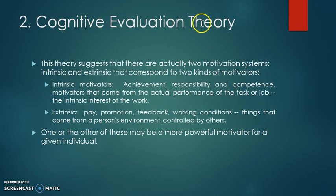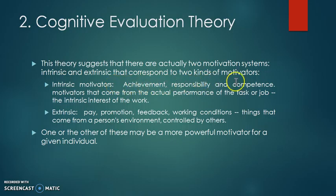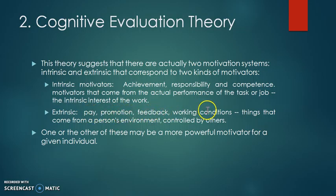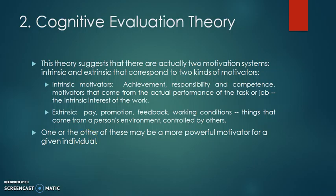The second theory is Cognitive Evaluation Theory. This theory suggests that there are actually two motivator systems — intrinsic and extrinsic — that correspond to two kinds of motivators. Intrinsic motivators include achievement, responsibility, and competence: motivators that come from the actual performance of the task or job, the intrinsic interest of the work. On the other hand, extrinsic motivators include pay, promotion, feedback, and working conditions — things that come from a person's environment and are controlled by others. One or the other may be a more powerful motivator for a given individual, meaning it may differ from person to person.